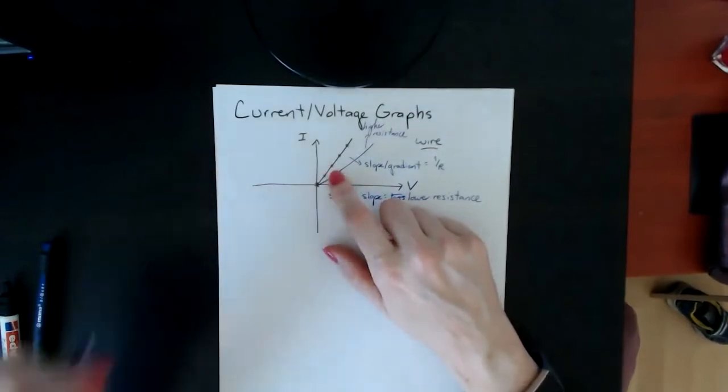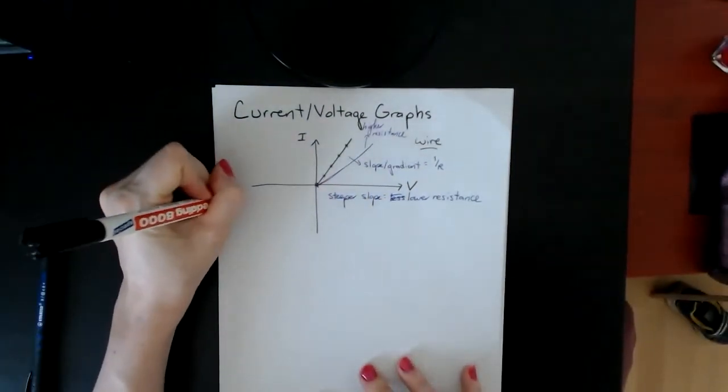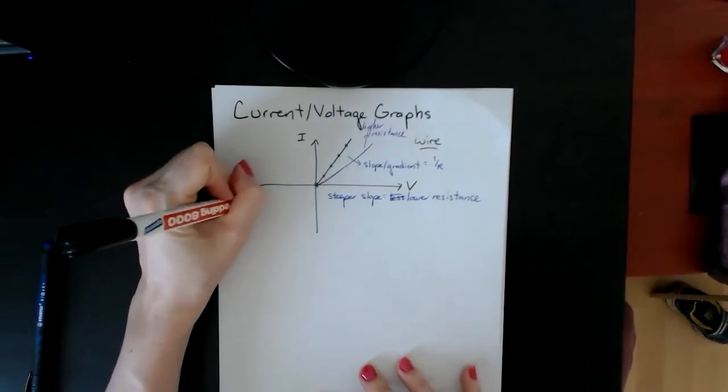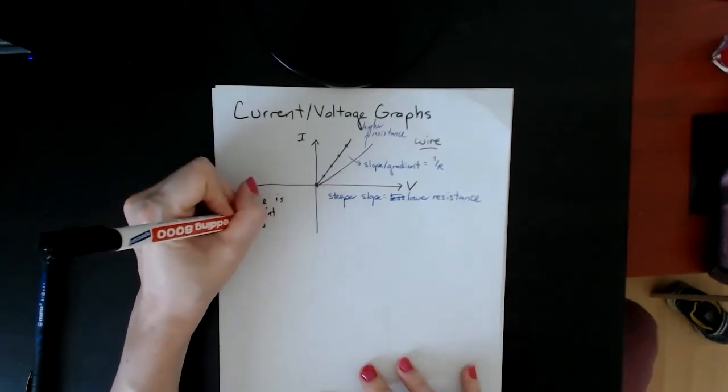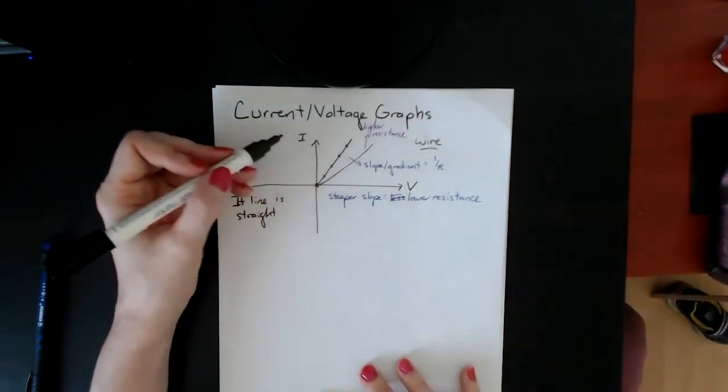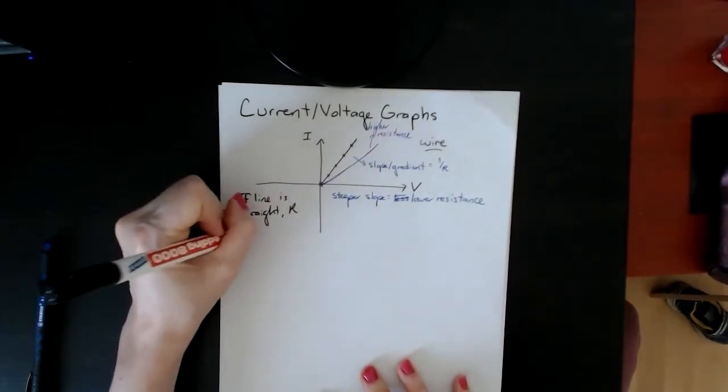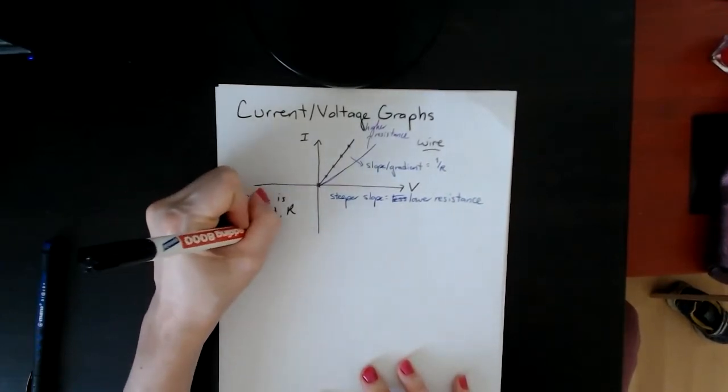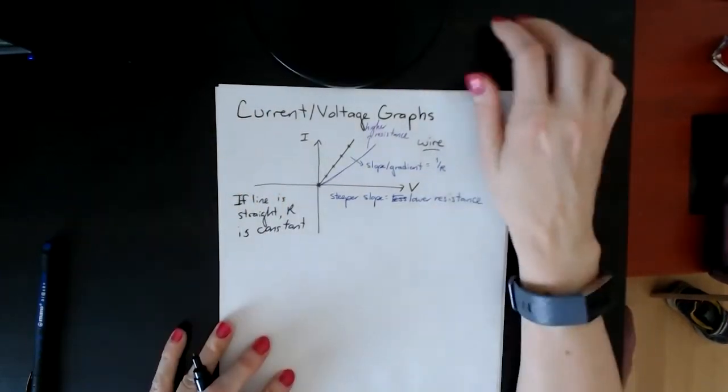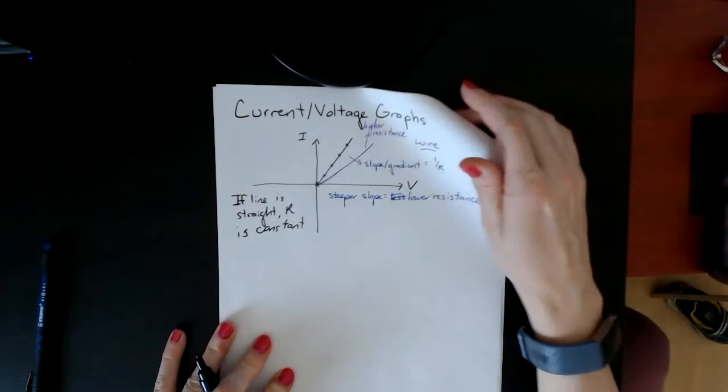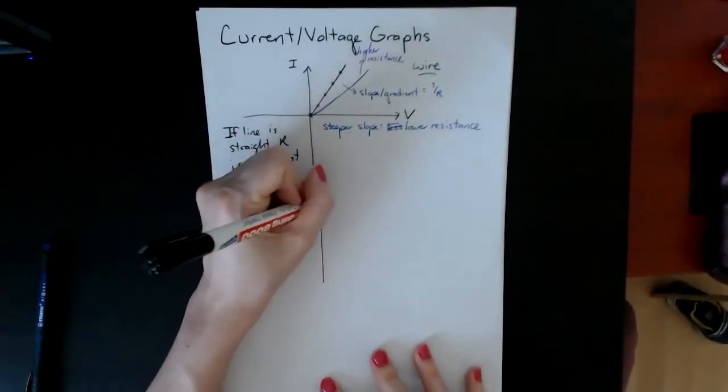That's one of the things. The other thing you want to note is: is the line straight or not? If the line is straight, that means the resistance is constant, no matter how much voltage or current you have within the system.